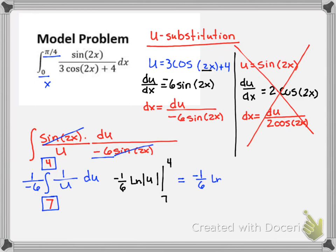So that means we're going to have negative 1/6 ln of 4 minus negative 1/6 ln of 7. That will become plus.